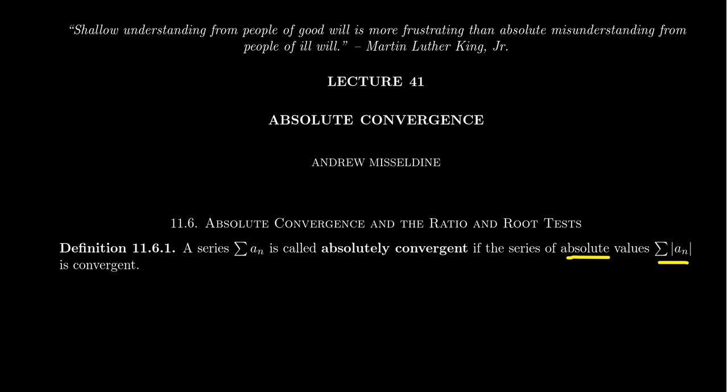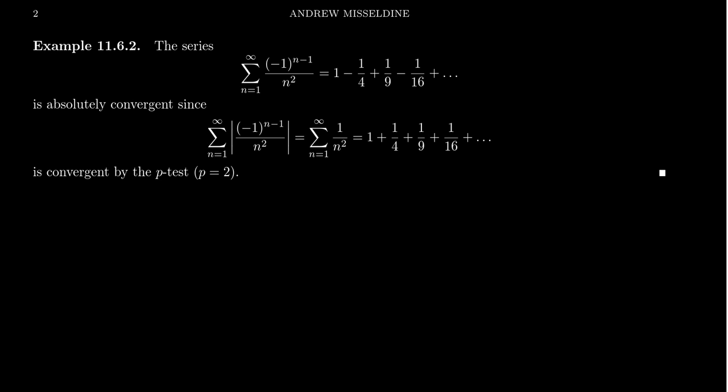We had actually talked about the absolute sequence earlier when we discussed the alternating series test. The absolute sequence is when you take your sequence and take absolute values of everything. The absolute series is the sum of the absolute sequence. So a series is absolutely convergent if its absolute series is convergent, hence the name.